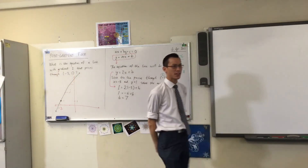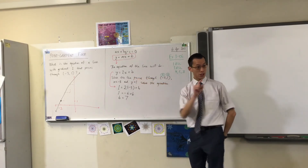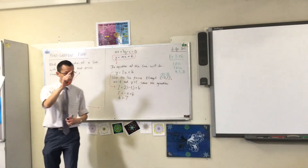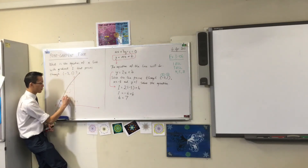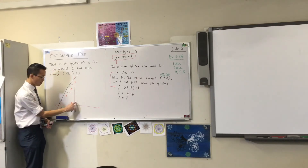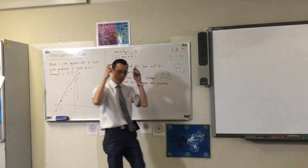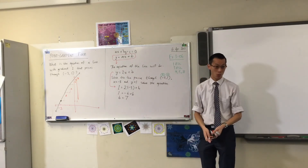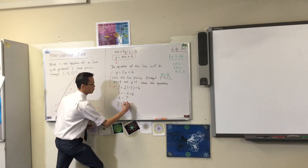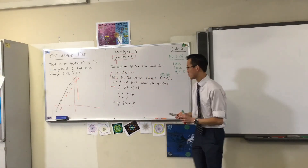What is b? It's the y-intercept. Does 7 look right on your diagram? It should. Remember when I went across 1, up 2, across 1, up 2, across 1, up 2 — I went 6 up in total. My starting y-value was 1, so 1 plus 6 equals 7. The visual picture confirms the algebra worked. Therefore, the equation of the line is y equals 2x plus 7.